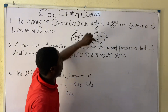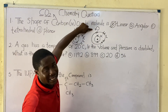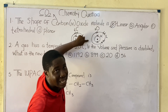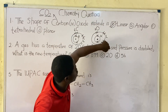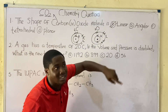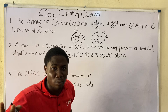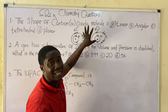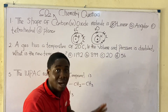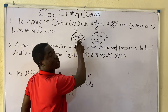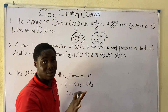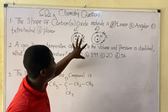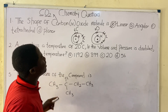The L shell can hold a maximum of 8 electrons. Any shell after the K shell holds a maximum of 8 electrons — don't place more than 8 electrons in any shell beyond the K shell. This is the foundation of introductory chemistry and atomic structure.